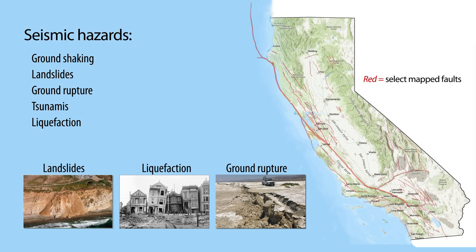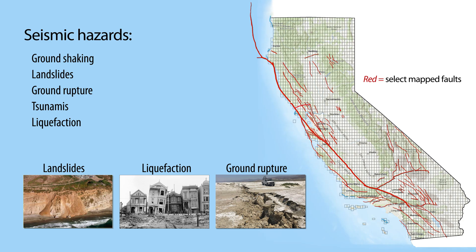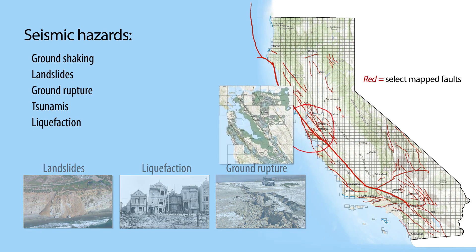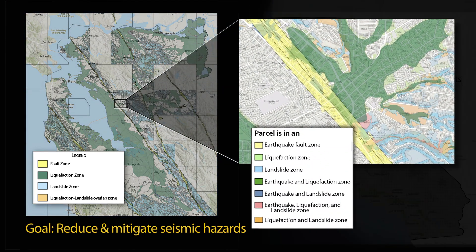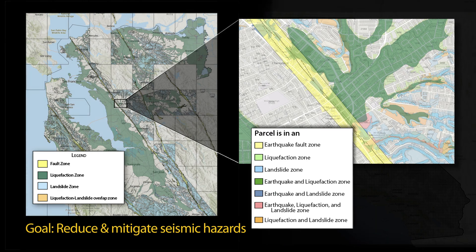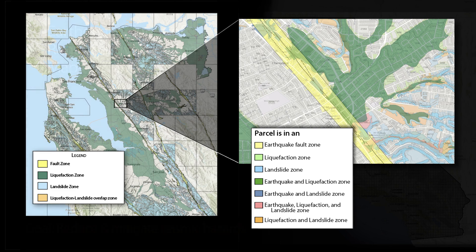Most Californians live within 30 miles of an active fault and may be at risk from one or more of these seismic hazards. Areas that may be subject to seismic hazards are mapped by the California Geological Survey so that cities, counties, and other users can adequately plan and prepare. The goal is to encourage land use practices that reduce and mitigate these seismic hazards.